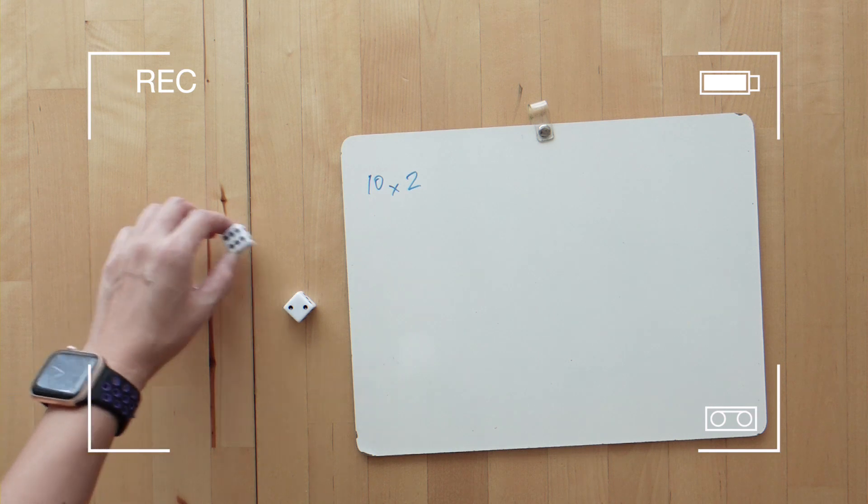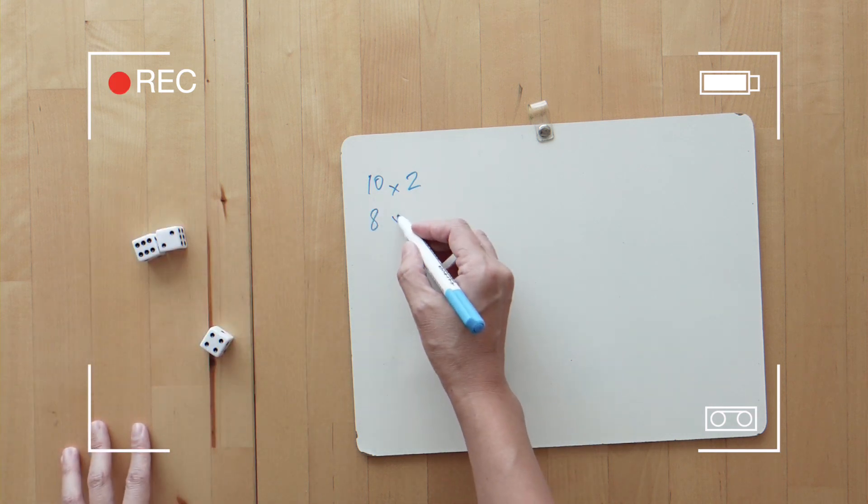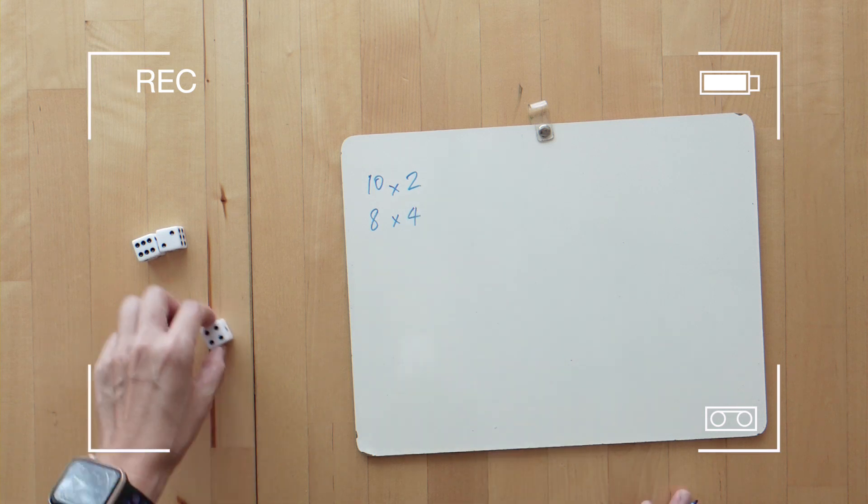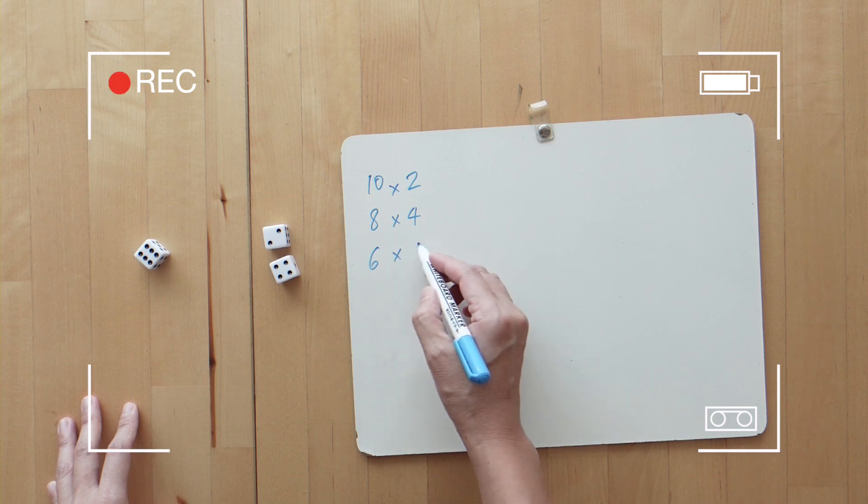We could have 6 add 2 to get 8 and multiply that by 4. Or we can have 4 and 2 to get 6 and multiply that by 6.